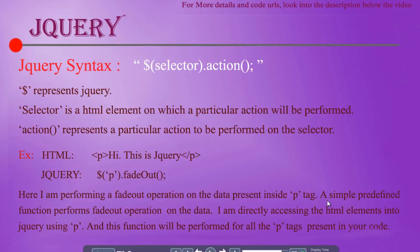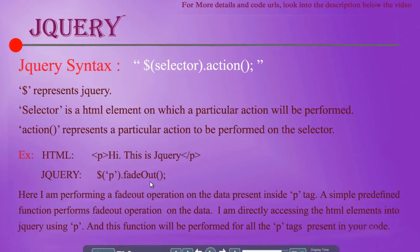So I want to perform a fadeout operation on the data present inside the p tags. A simple predefined function performs fadeout for all the p tags present in your code. If you write 10 paragraph tags in your HTML document, this fadeout operation will be performed for all 10 p tags.